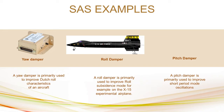The most famous is the yaw damper, which is used on most commercial aircrafts to improve Dutch roll characteristics. The roll damper is used to improve roll mode oscillations, for example on the X-15 experimental aircraft. The pitch damper is used to improve the short period oscillation mode.